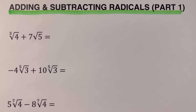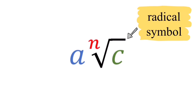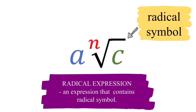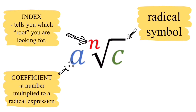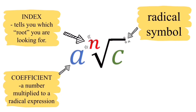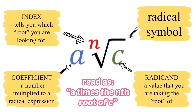Now let's look at the parts and definition of radical expressions. The first part is the radical symbol — the reason this is called a radical expression is because it contains the radical symbol. The letter 'a' is called the coefficient, which is a number multiplied to the radical expression. The letter 'n' is called the index, which tells you which root you're looking for. If the index is not written, that invisible number is 2. The letter 'c' is named the radicand, the value you are taking the root of. This expression is read as 'a times the nth root of c.'